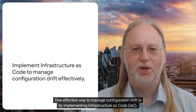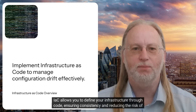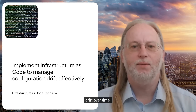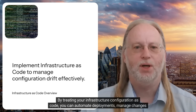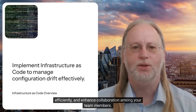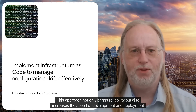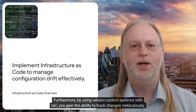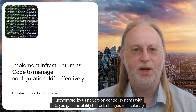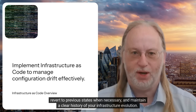One effective way to manage configuration drift is by implementing Infrastructure as Code (IaC). IaC allows you to define your infrastructure through code, ensuring consistency and reducing the risk of drift over time. By treating your infrastructure configuration as code, you can automate deployments, manage changes efficiently, and enhance collaboration among your team members. This approach not only brings reliability, but also increases the speed of development and deployment processes. Furthermore, by using version control systems with IaC, you gain the ability to track changes meticulously, revert to previous states when necessary, and maintain a clear history of your infrastructure evolution.